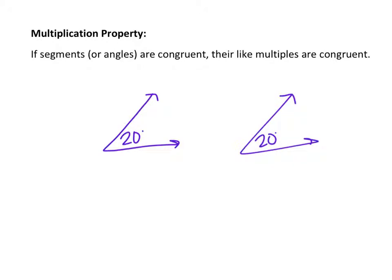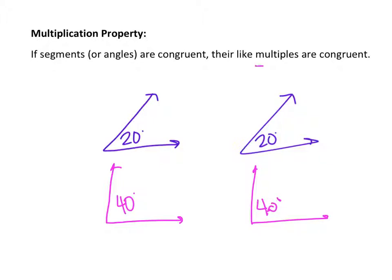The multiplication property is pretty straightforward. It states that if segments or angles are congruent, their like multiples are congruent. For example, we have two congruent angles, both 20 degrees. If you double one — multiply by 2 — your 20-degree angle becomes 40 degrees. Well, if you double the other angle, 20 times 2 is also 40 degrees. So their like multiples, the new angles, will be congruent, because we took congruent angles and multiplied them by the same number.